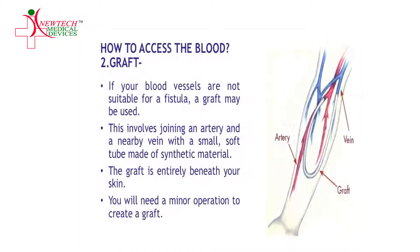The second way to access the blood is by creating a graft. If your blood vessels are not suitable for a fistula, a graft may be used. This involves joining an artery and a nearby vein with a small, soft tube made of synthetic material. The graft is entirely beneath your skin, and you will need a minor operation to create it.